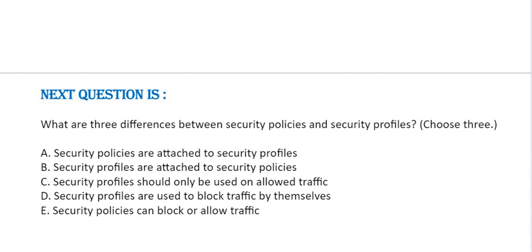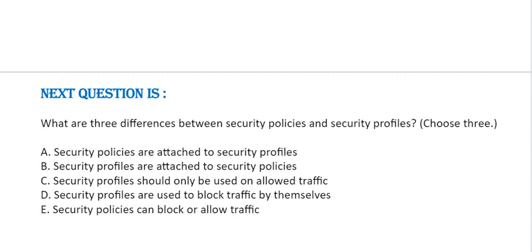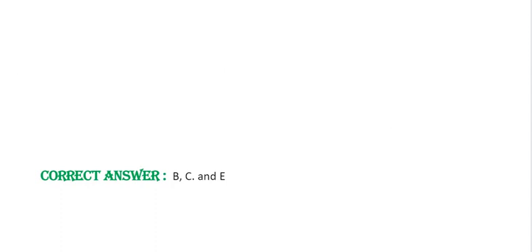Question: What are three differences between security policies and security profiles? Option A: Security policies are attached to security profiles. Option B: Security profiles are attached to security policies. Option C: Security profiles should only be used on allowed traffic. Option D: Security profiles are used to block traffic by themselves. Option E: Security policies can block or allow traffic. Correct answer is Option B, C, and Option E.